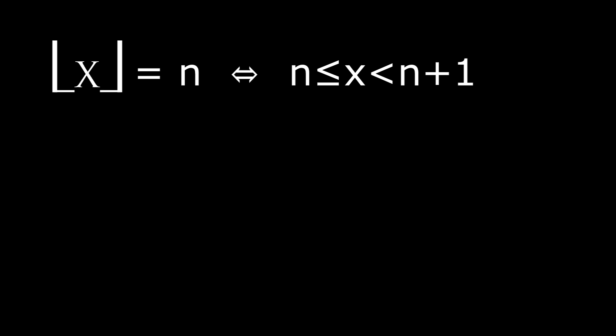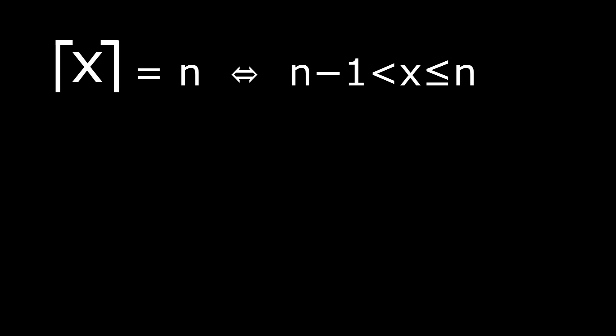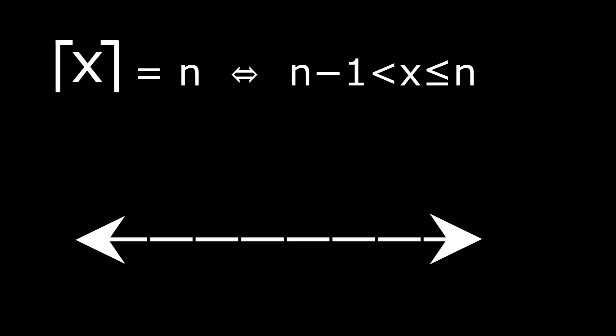The floor of x equals an integer n if and only if n is less than or equal to x is less than n plus 1. Here's a graph where x is the value and the floor of x is n. The ceiling function is similar except x is between n minus 1 and n. Seen here, the value x has the ceiling n.